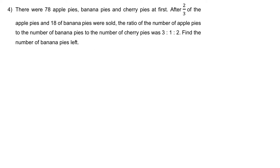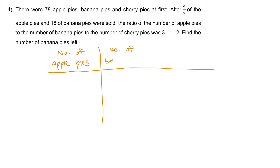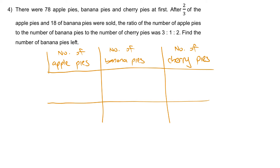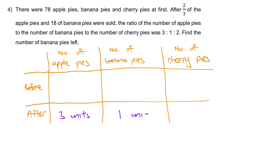Let's set up the table with apple pies to banana pies, and a before and after scenario. For this case, we are going to work backwards because we are given a definite ratio at the end. So we start from the after state: 3 units for apple, 1 unit for banana, and 2 units for cherry.